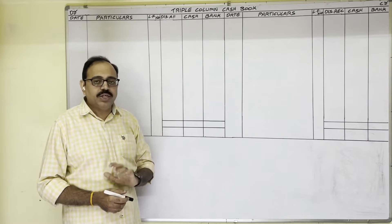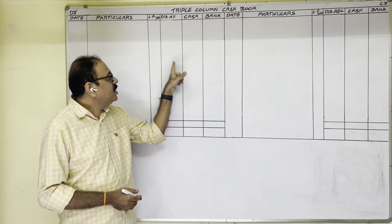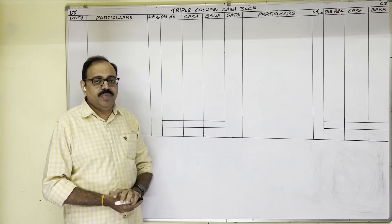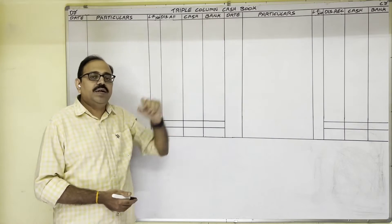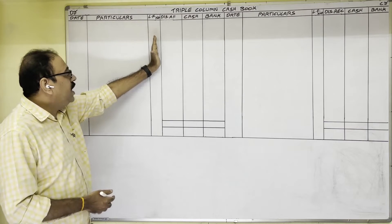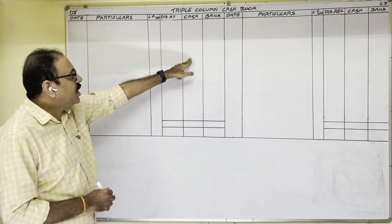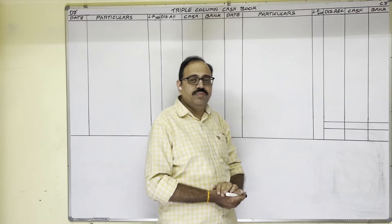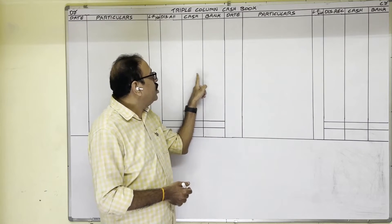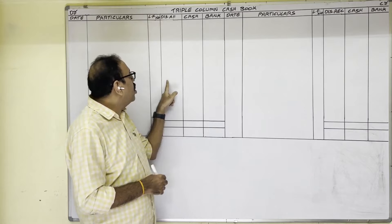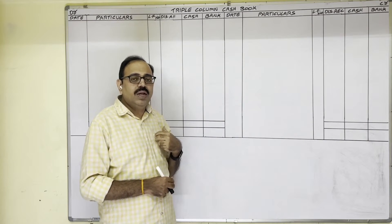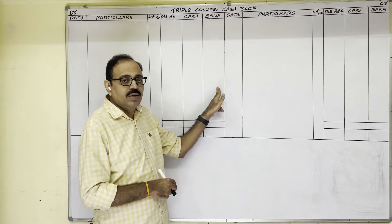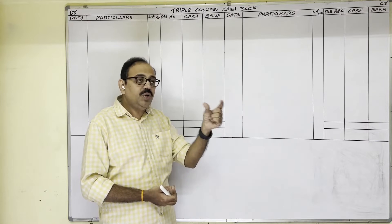We can also call it a three column cash book, or cash book with discount, cash and bank columns — all are the same. The cash book format is an account format with a debit side and credit side. The debit side has date, particulars, ledger folio number, discount allowed, cash, and bank columns. The credit side is the same except discount allowed is replaced with discount received. We prepare two accounts simultaneously: cash account and bank account. The discount column is a memorandum column. As three amount columns we have discount, cash, and bank — this is known as the triple column cash book.